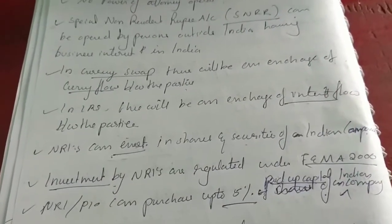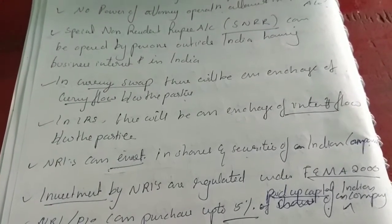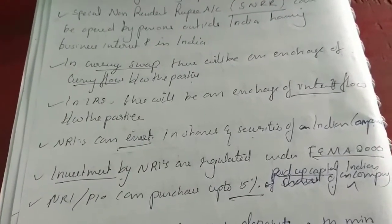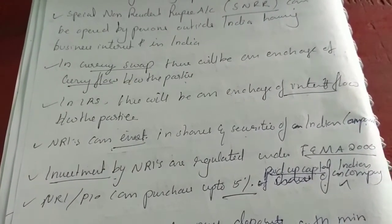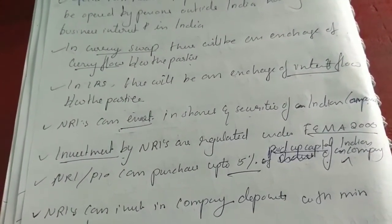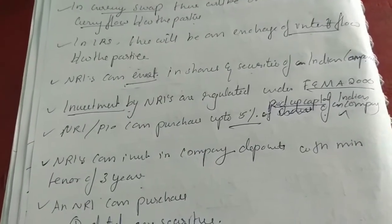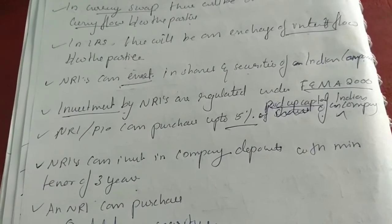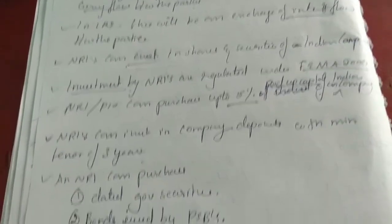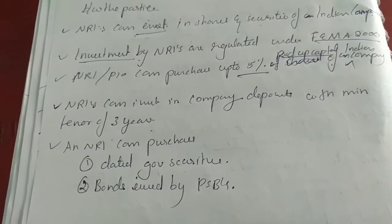NRIs can invest in shares and securities of Indian companies. Investment by NRI is regulated under FEMA 2000. An NRI or PIO can purchase up to 5% of the paid-up capital of an Indian company. NRI can invest in a company deposit with a minimum tenure of 3 years. NRI can purchase dated government securities and bonds issued by PSUs.